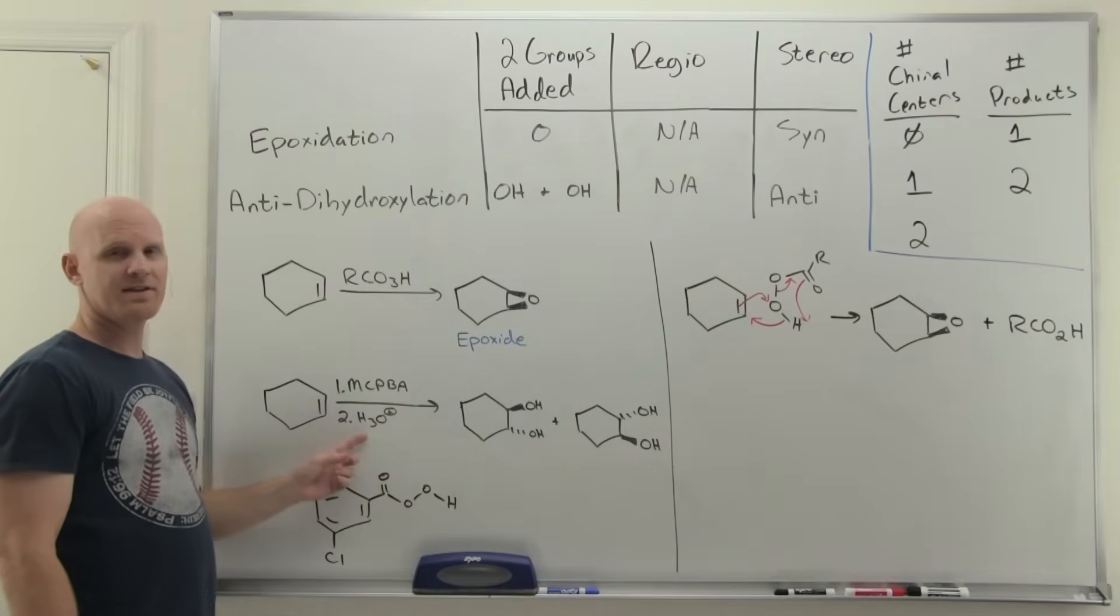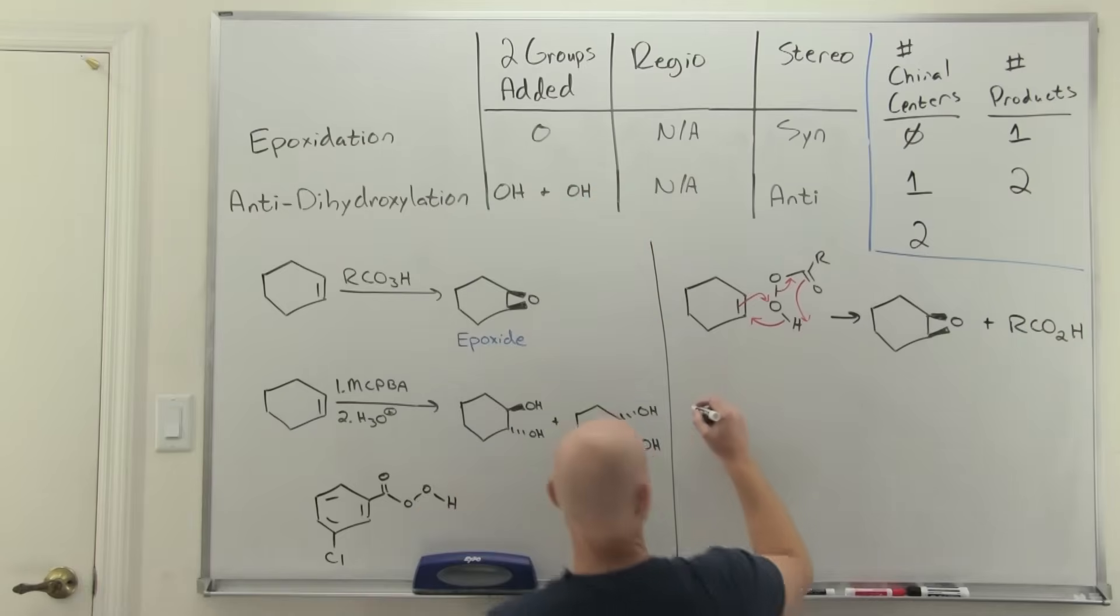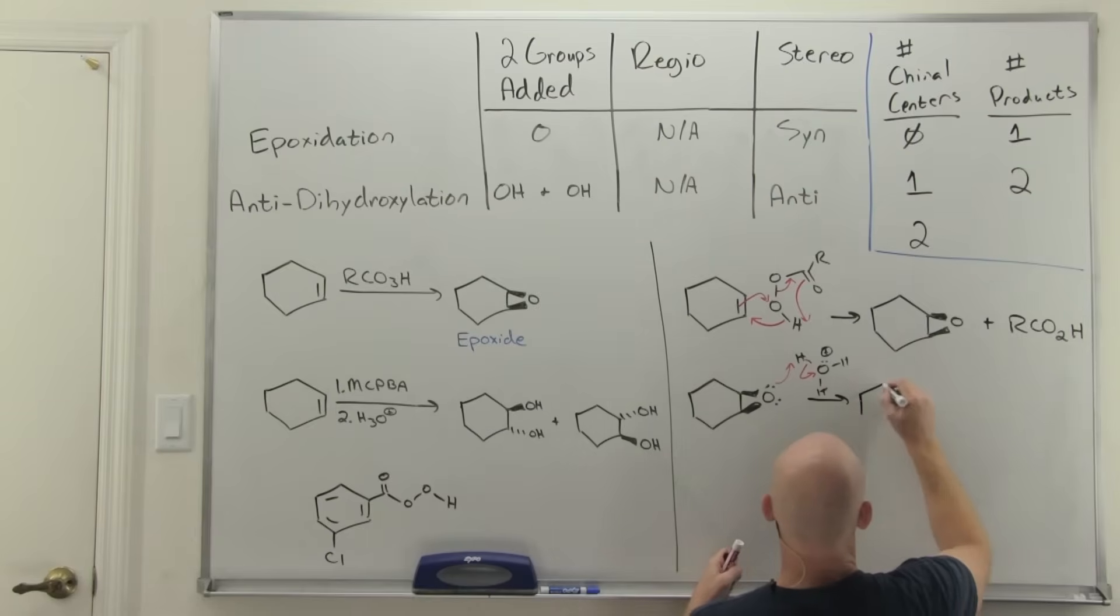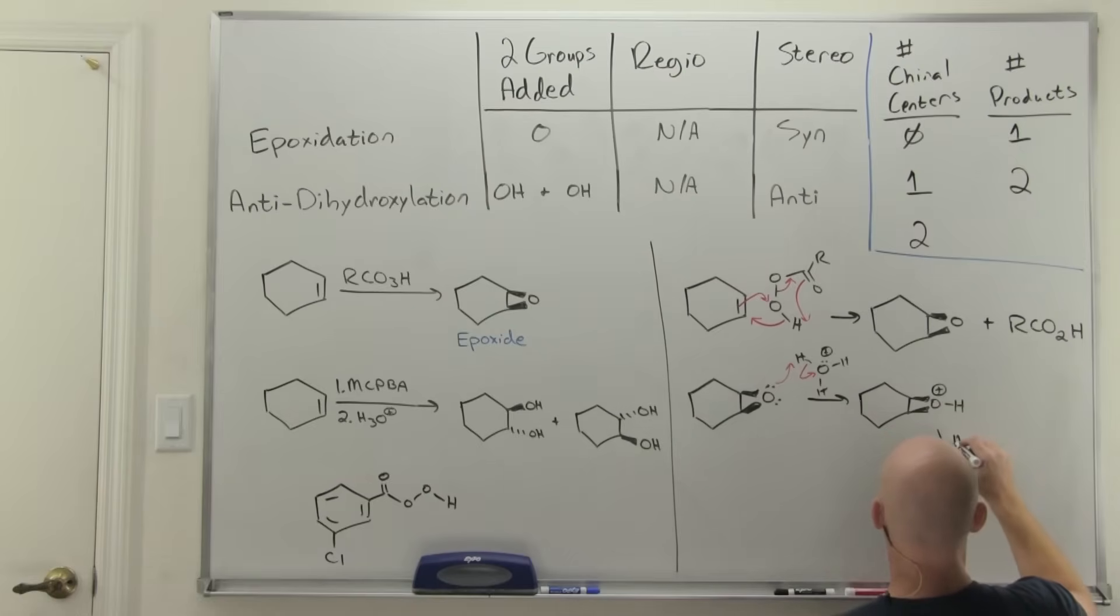The second step is the acid catalyzed ring opening with H3O+. This takes a couple of steps. It turns out the first step, since this is taking place in acid, is that we actually protonate the epoxide first. We'll do that with our H3O+. With a protonated epoxide, it is actually a much better electrophile than had it not been protonated. These two carbons are sharing the partial positive charge, and now they have even more partial positive charge now that the oxygen is even more withdrawing having a positive formal charge.